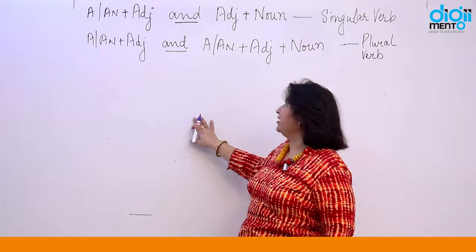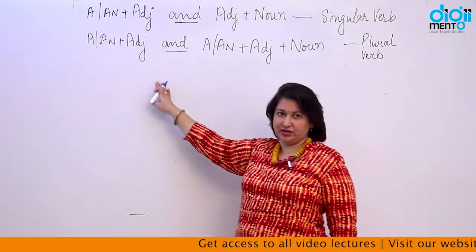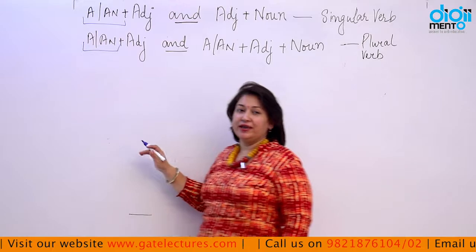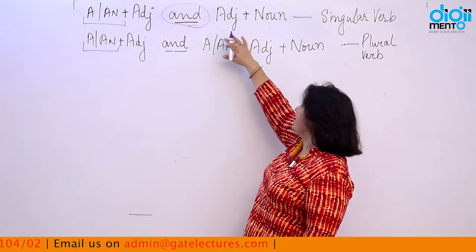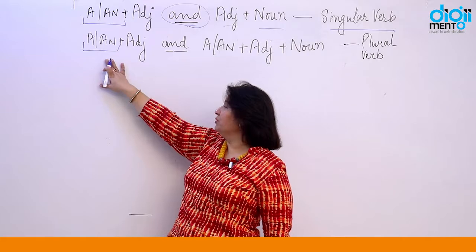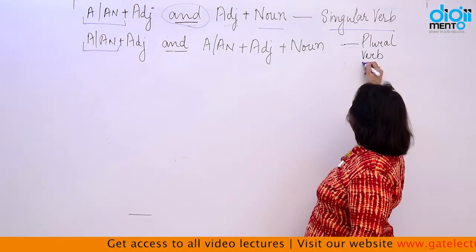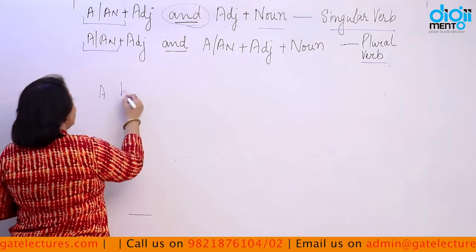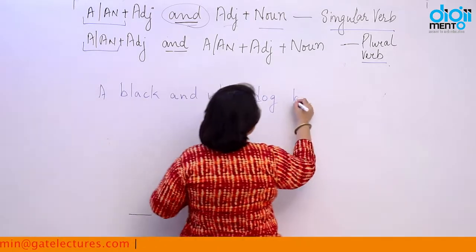Similar to the previous rule about determiners with nouns, this rule is about determiners 'a' and 'an' used with adjectives. If we add 'a' or 'an' with an adjective and then join it with another adjective and a noun using 'and,' it always has a singular verb. But if a determiner is used with each adjective separately, the subject becomes plural and takes a plural verb.